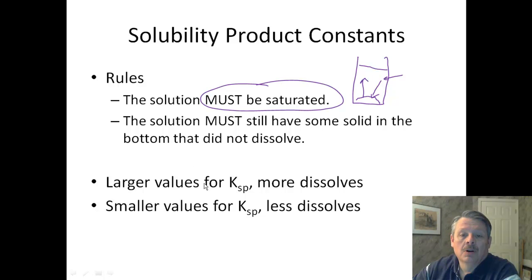So the larger values for Ksp, this is your solubility product constant, the larger number we have, the more stuff is dissolved. The smaller values, the less it dissolved. And as we approach zero, we just say it doesn't dissolve at all.